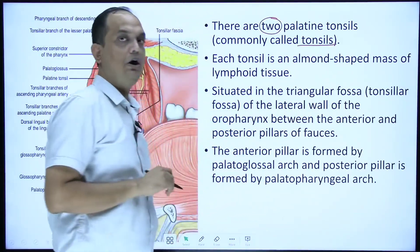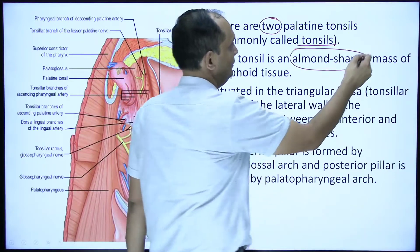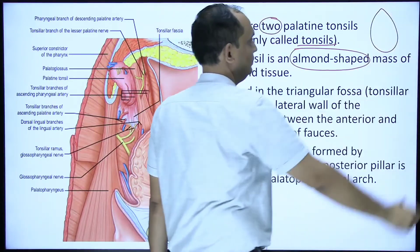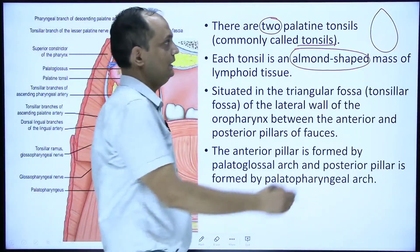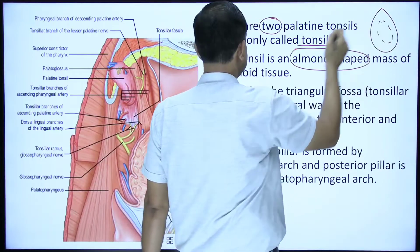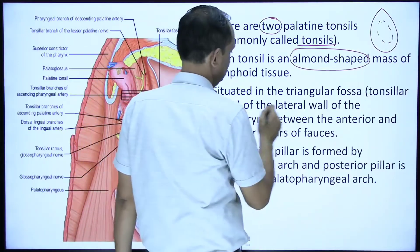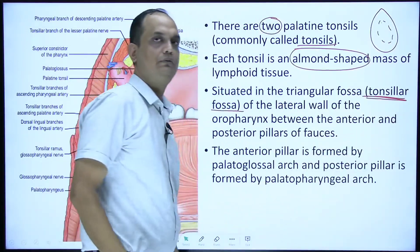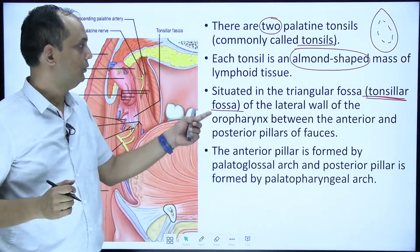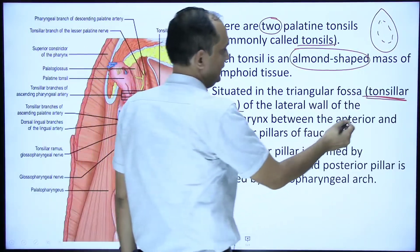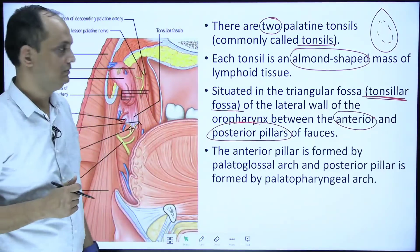Each tonsil is an almond-shaped mass of lymphoid tissue. These lymphatic collections in your oropharynx, known as palatine tonsils, are almond-shaped masses present in a triangular fossa called the tonsillar fossa. The tonsillar fossa is present in both the right and left walls of your oropharynx, between the anterior pillar and the posterior pillar.